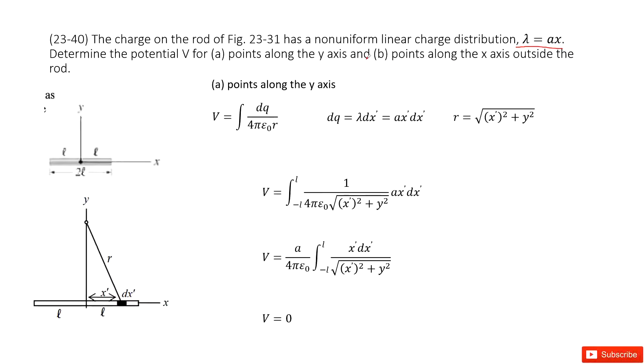So how can we do that? We can cut this rod into infinitely small fractions. One of the fractions looks like this one. And then the location we're interested in on the y-axis we call it P.